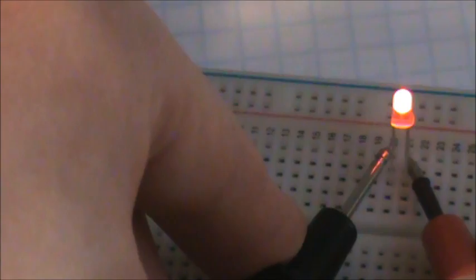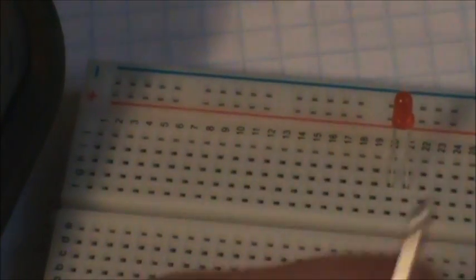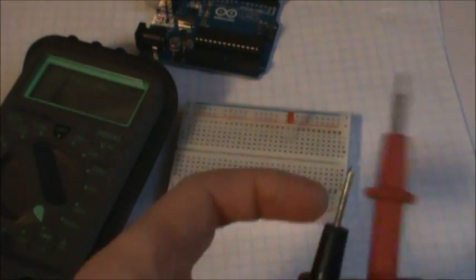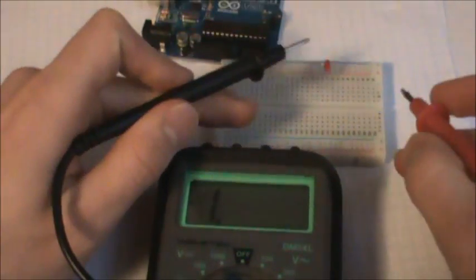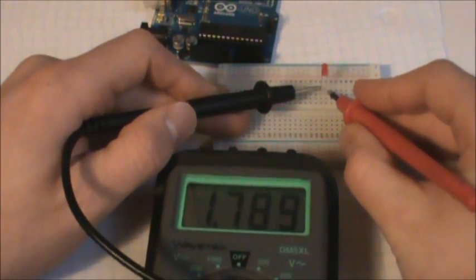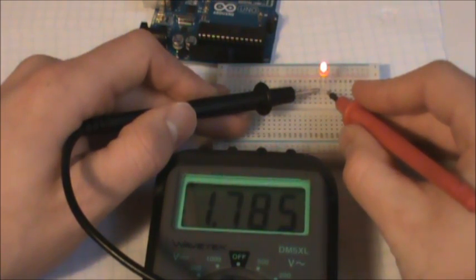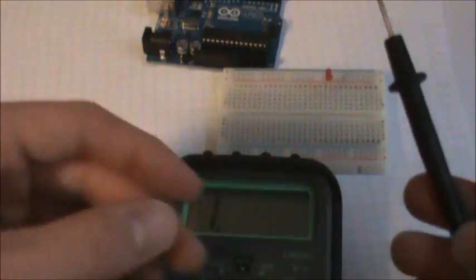So we'll just put it into the breadboard, and my negative end is on the left. Black is negative, red is positive. We touch the prongs and notice that it turns on. While it's on, you should look at your voltmeter display and you will see the voltage drop over the LED. So 1.785 volts. Write down that number or remember it because it will be used later in the calculations.